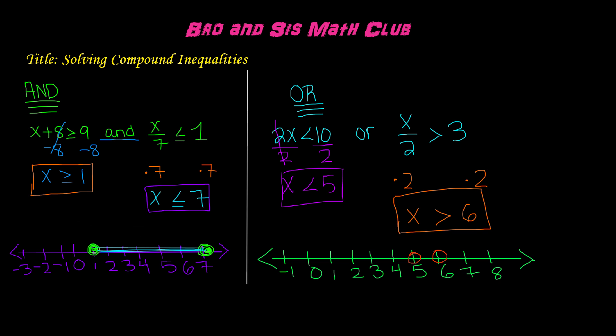Now we know this is an 'or' compound inequality, meaning when you graph it, it doesn't have to be in between the points. x is less than 5, so all solutions less than 5 lie on the left side of the point — we shade to the left. x is greater than 6, so we shade to the right side of that point.